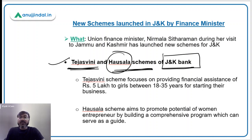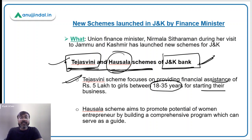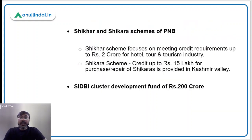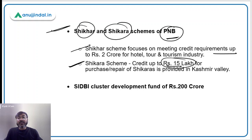The Hausla scheme focuses on providing financial assistance of Rs. 5 lakh to girls between the age of 18 and 35 years for starting their own business. The Tejasvini scheme aims to promote the potential of women entrepreneurs through a comprehensive guidance program. Two more schemes — Shikhar and Shikara — were launched by PNB. Shikhar scheme focuses on meeting credit requirements of up to Rs. 2 crores for the hotel, tour, and tourism industry, while Shikara scheme provides credit up to Rs. 15 lakh for purchase or repair of Shikaras — the wooden boats seen on Dal Lake.